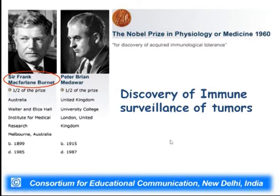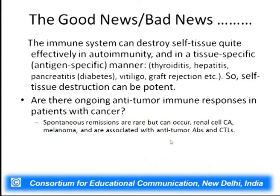Immune surveillance was discovered by Sir Frank Macfarlane Burnet, who received half the Nobel Prize for Physiology or Medicine in 1960. The immune system can destroy any tissue it does not recognize as self — this is autoimmunity. In a tissue-specific manner, if targeted against the liver it is hepatitis, against the thyroid it is thyroiditis, against the pancreas it is pancreatitis. Graft rejection was discussed in the previous lecture.